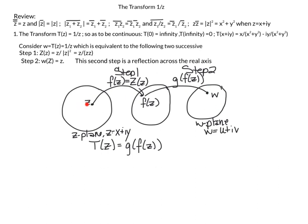Instead of going directly from z to w, we break t of z into two phases. The first function, which the book calls capital Z (I'll write it as f of z since capital Z looks like lowercase z), takes our complex number and maps it to f of z in step one. Then from there we apply one more transformation, g on f of z, which gives us w. We want f and g to be such that t of z equals g composed with f of z.